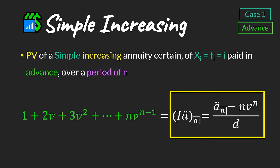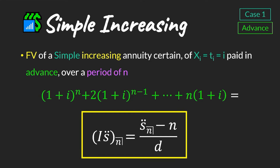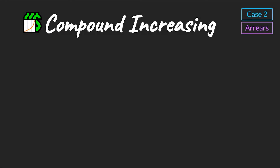More formally, the present value of a simple increasing annuity paid in advance over a period of n has the cash flow profile starting with one and ending with n·vⁿ⁻¹, and when we have this profile we use the increasing annuity in advance formula. Similarly, to find the future value of a simple increasing annuity where cash flows are paid in advance, we look for the corresponding cash flow profile and use the appropriate formula.